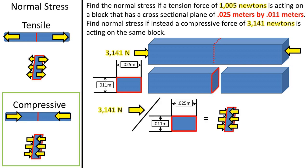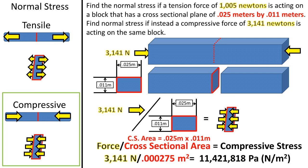Once again, if we take the compressive force over the cross-sectional area, we get a stress, but this time it is compressive stress. After plugging in all of our numbers, we get a compressive stress of 11,421,818 pascals or newtons per meter squared.